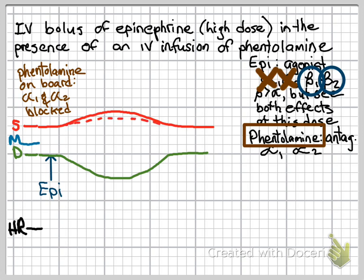The increase in systolic pressure may not be as great as you would expect because systolic pressure does piggyback on top of diastolic pressure, and our diastolic pressure has decreased due to the beta-2-mediated vasodilation. So we may not see such a large peak — we may not even see much of any peak at all. But in any case, what we're always going to see is an increase in pulse pressure, and this indicates a beta-1-mediated increase in contractility.